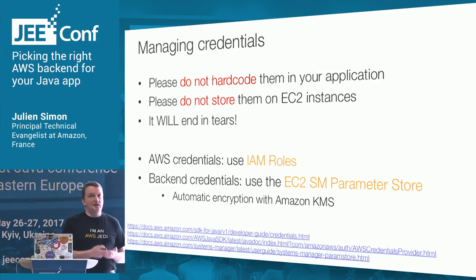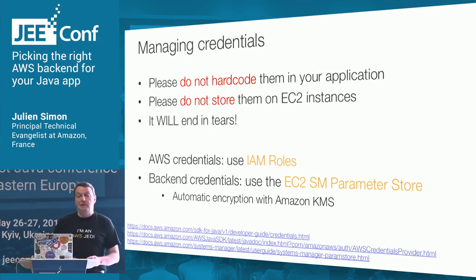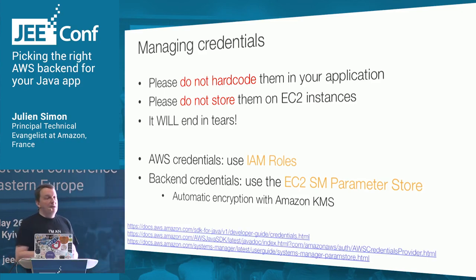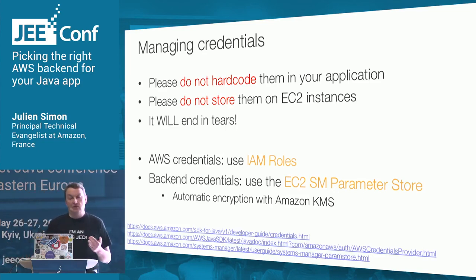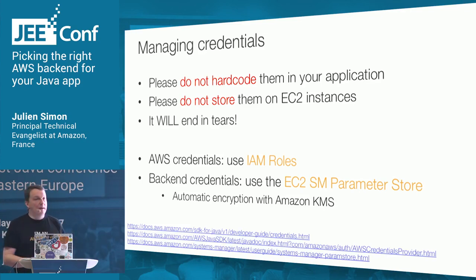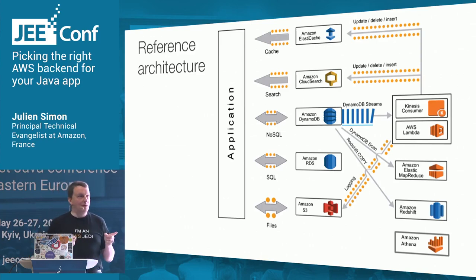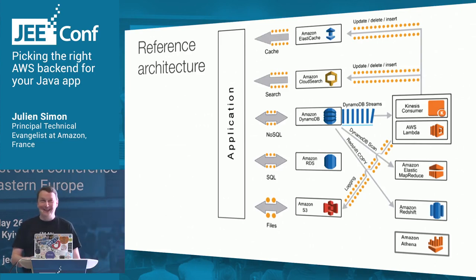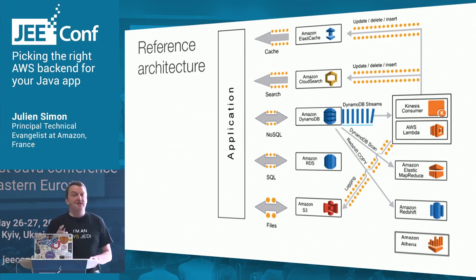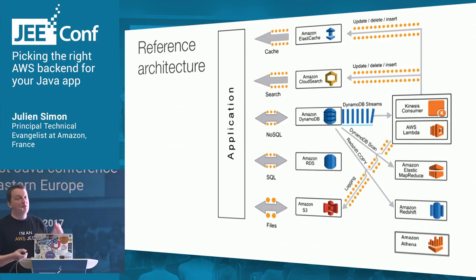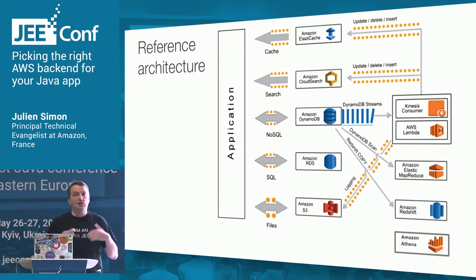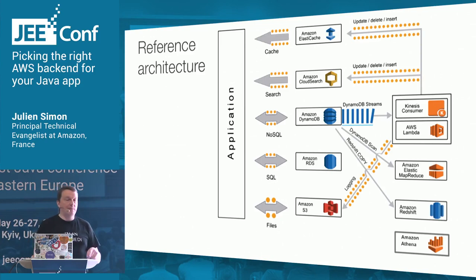If you need to distribute AWS credentials like the API key and secret key, use IAM roles. If you need to distribute backend credentials like a MySQL login and password, we have a new service called the EC2 Systems Manager that has a module called the parameter store. Credentials are encrypted with KMS and you can retrieve them in one API call, so you never have any secret stuff in your code.